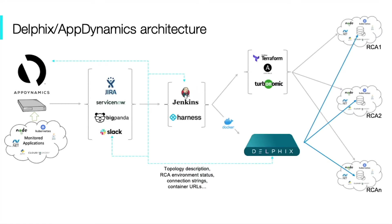Let's review the integration workflow. On the left-hand side, AppDynamics will detect and predict problems in our production infrastructure. For each one of these problems or incidents, AppDynamics will create a ticket in Jira or any other ticketing tool. Once the ticket has been opened in Jira, the site reliability engineer will have the option to create one or many root cause analysis environments.